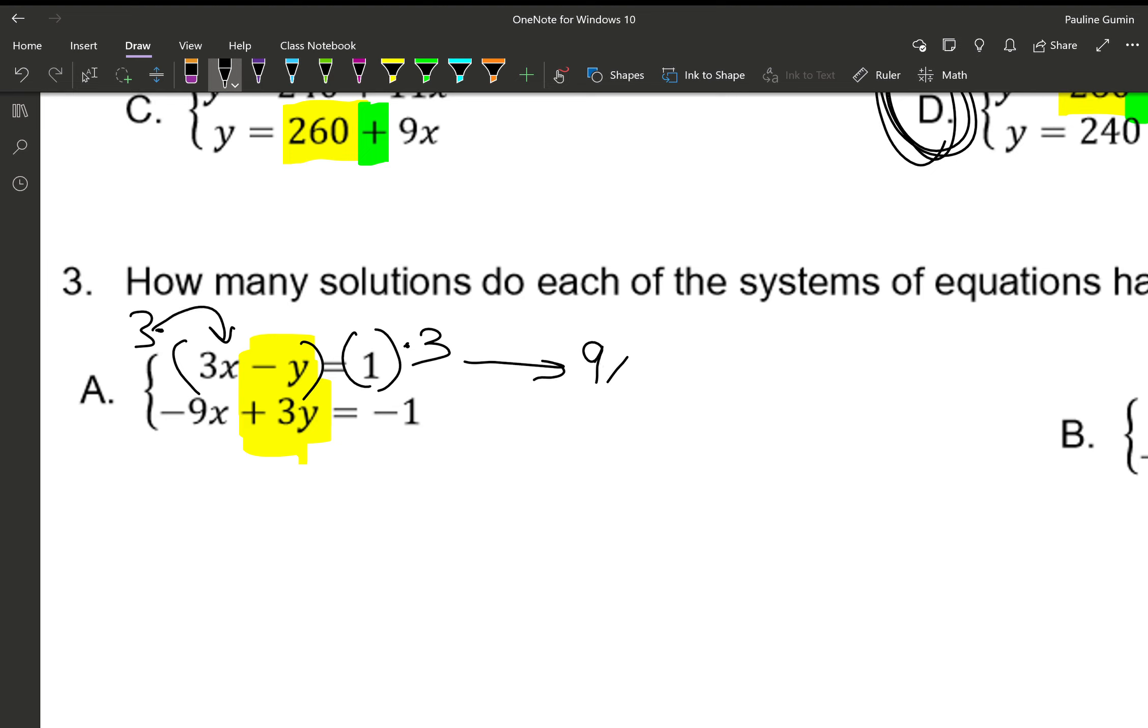So this is what it ends up being. 3 times 3X, 9X. 3 times negative Y, negative 3Y, and 3 times 1, 3. The bottom equation, I'm just going to rewrite and keep it the same because we didn't need to change anything in order to get rid of those Y's. Check it out. The Y's are now negative 3, positive 3, which means they cancel. So let's go ahead and add them. Negative 9Xs and 9Xs, shoot, they cancel too.